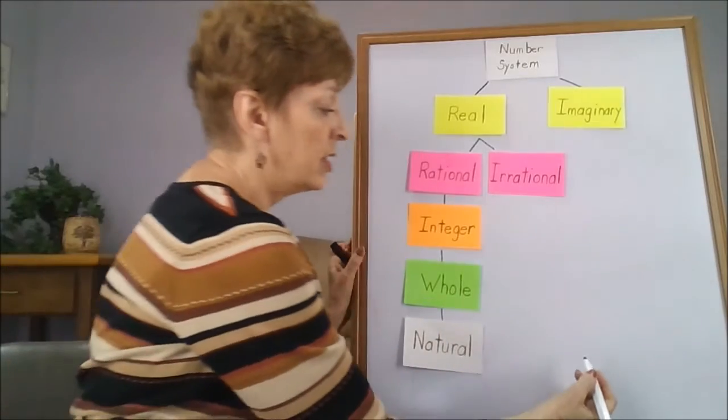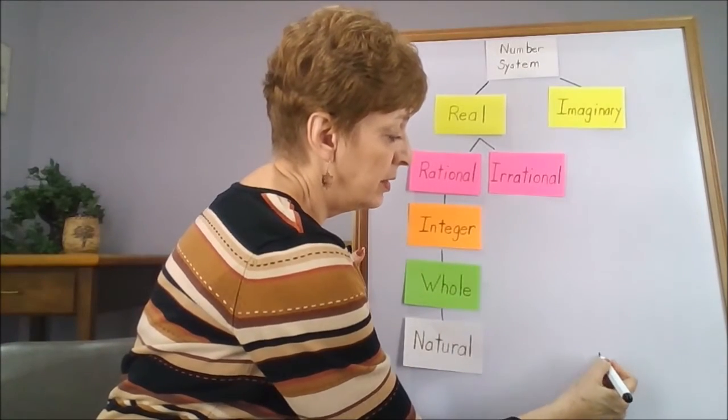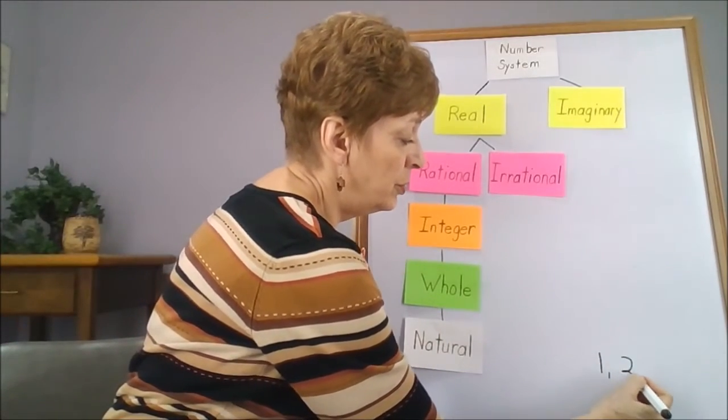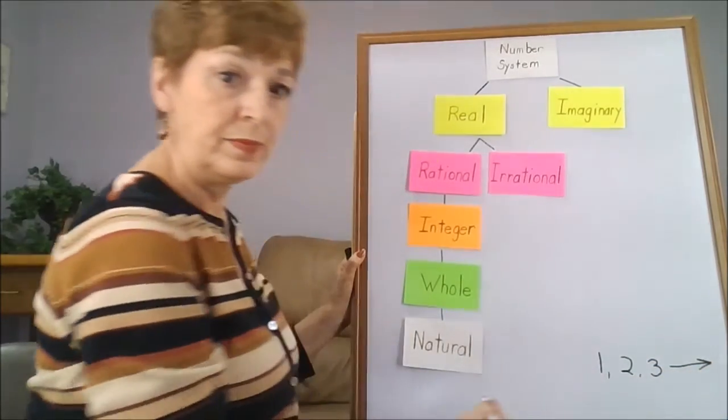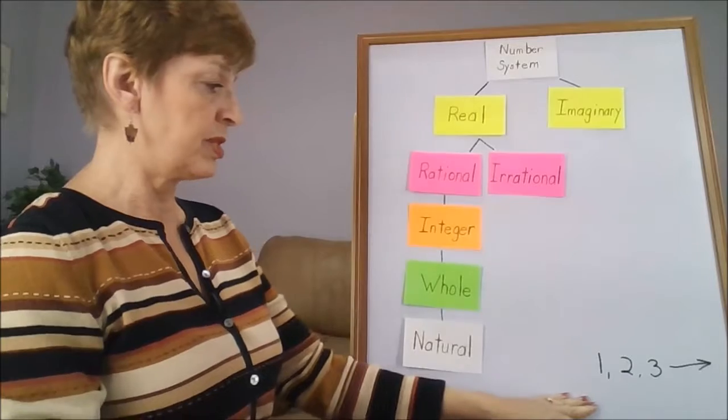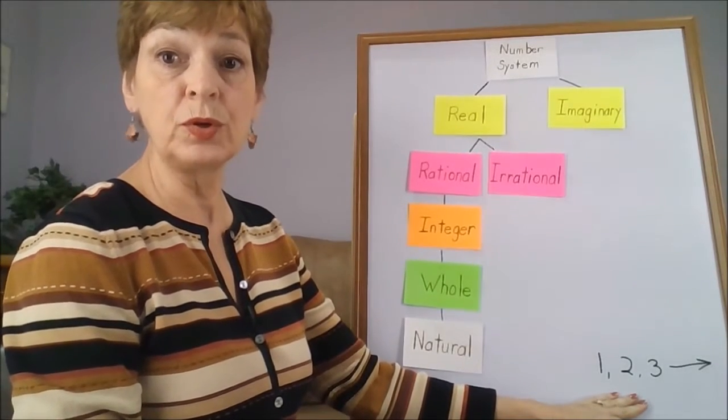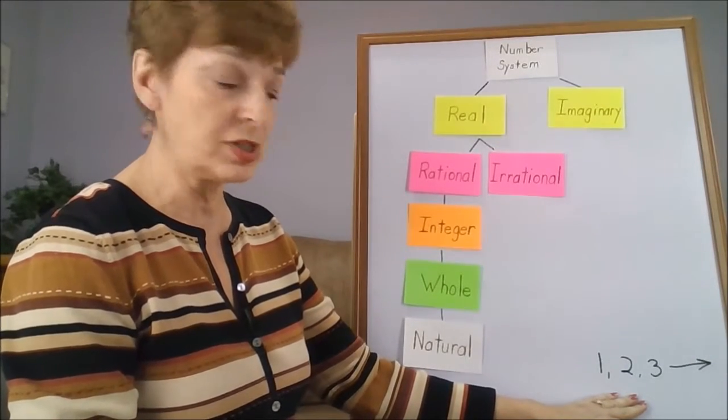Our natural numbers are numbers that are 1, 2, 3, to infinity. These would be numbers that we probably teach our preschooler when a child is first starting to count.